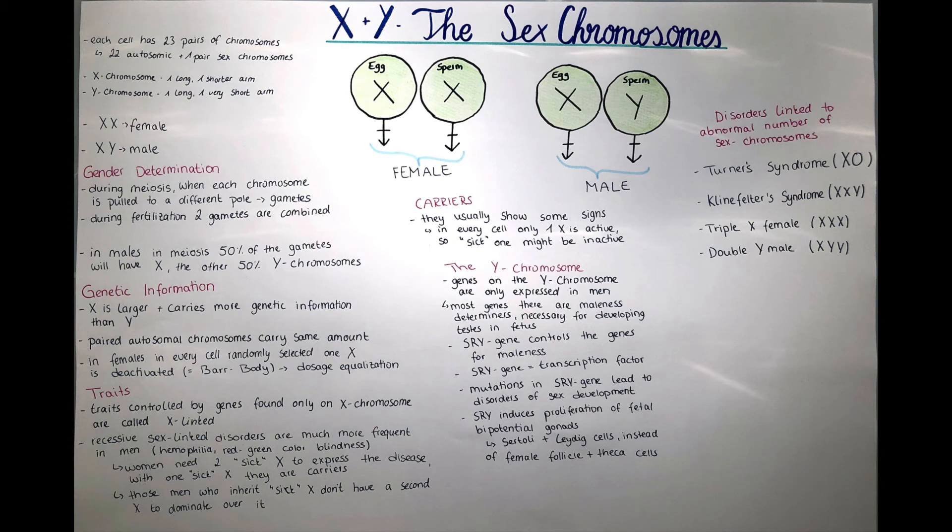Mutations in this SRY gene can lead to disorders of the development of the gender. This might lead to a decrease of the genotype or phenotype of males. Also, SRY induces the proliferation of the fetal bipotential gonads. In the beginning, the embryo has the possibility to either create Sertoli and Leydig cells for male fetuses or follicle and theca cells for females, which are important for the development of the egg cells. This SRY gene induces that the Sertoli and Leydig cells will be created instead of the female cells.